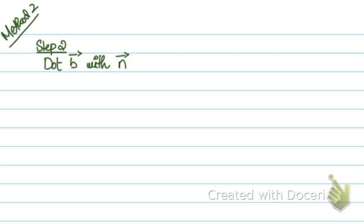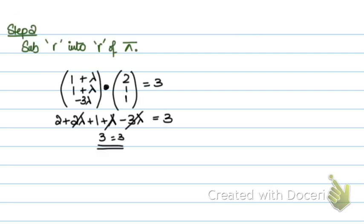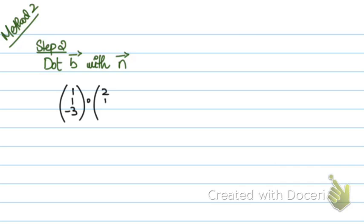The second method first requires you to dot the direction vector with the normal of the plane. The direction vector was (1, 1, minus 3) dotted with (2, 1, 1). If the answer is 0, the line is parallel to the plane — because the normal is perpendicular to the plane, so the direction vector and the normal are perpendicular. So: 2 + 1 minus 3 = 0. The line is parallel to the plane. This is step 1.